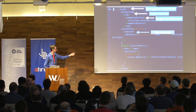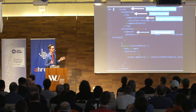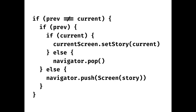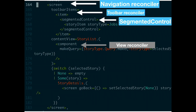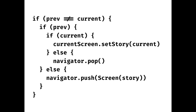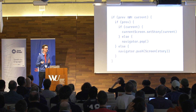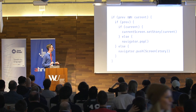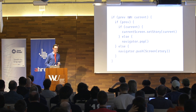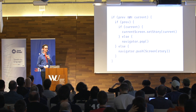So we have a screen, and if there's a selected story, we push another screen, but it happens behind the scenes — there's a reconciler behind it. It converts the declaration you can see here into imperative calls. If there was a previous story and there's a current story, you just set the story on the current screen. If there's no next story, you pop; if there's another story, you push. The React Native navigation story, in my opinion, is really messy because the APIs are super imperative and a little bit weird.